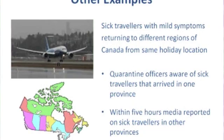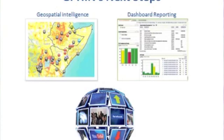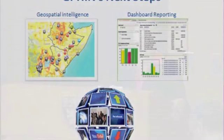For example, program areas received a call about travelers arriving in one province, but we picked up from media other travelers arriving in other parts of Canada from the same location. We have endless examples of how the combination of media and even social media — the agency also uses Twitter and blogs — helps validate reports and determine the scope of an emerging event. The next steps are really looking at how to integrate social media.